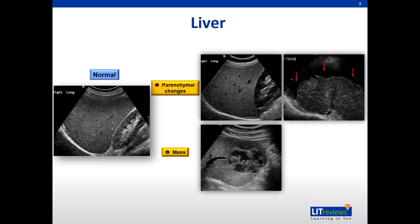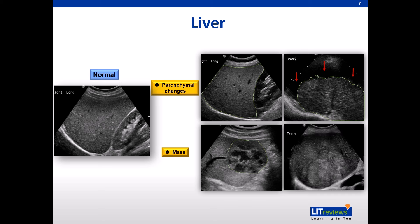Now look at the bottom left image. Can you identify the solid cystic mass in the left liver lobe? Well done if you have identified the outlined portion. Next, look carefully at the bottom right image. Do you see a mass? Notice there is inconsistency in the liver echoes — it is not homogeneous throughout. If you identified the mass that has been outlined, you were right.